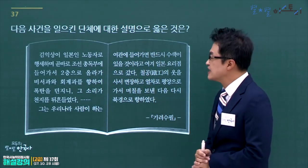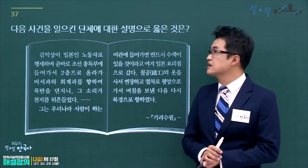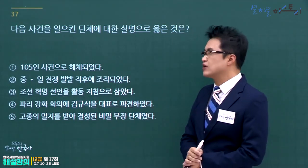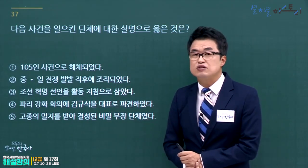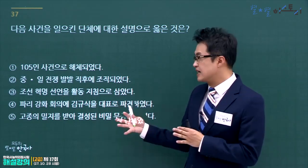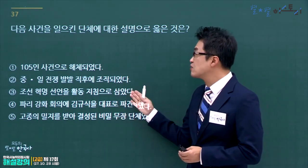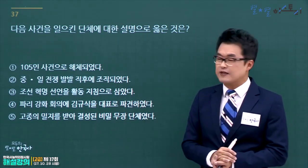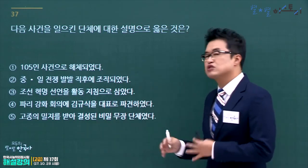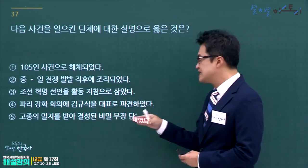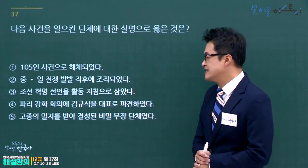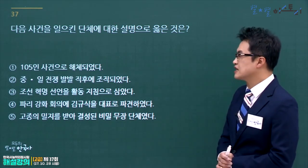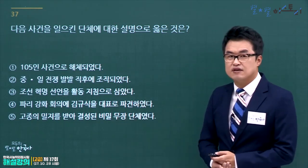김익상이 등장하는 사건을 일으킨 단체는 의열단입니다. 의열단에 대한 설명으로 옳은 것을 고릅니다. 105인 사건으로 해체된 것은 신민회이고, 중일전쟁 발발 직후 조직된 것이 아니라 의열단은 1919년에 조직되었습니다. 신채호의 조선혁명선언을 활동 지침으로 삼은 것이 의열단입니다. 정답은 3번입니다.